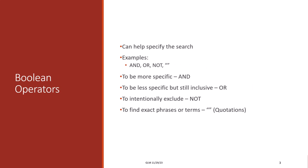A helpful approach to start your search is by using search strings with Boolean operators. They can help specify the search — for example, AND, OR, and NOT, as well as quotations. AND is used to be more specific, OR is used in a less specific but still inclusive way, and NOT is used to intentionally exclude something. If you want to find exact phrases, quotations will be very helpful.